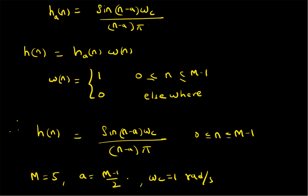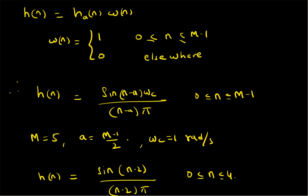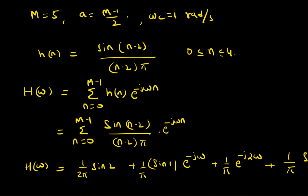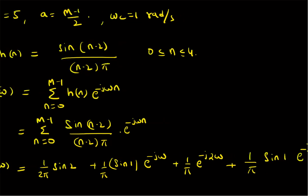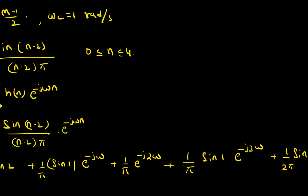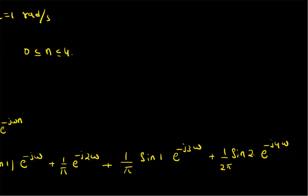In this example, the parameters are: M = 5 (filter length), a = (m−1)/2 = 2, and ω_c = 1 radian per second. So h(n) = sin(n−2) / ((n−2)π) for n = 0 to 4. Applying the DTFT gives the explicit frequency response: H(ω) = (1/2π)·sin(2) + (1/π)·sin(1)·e^{−jω} + (1/π)·e^{−j2ω} + (1/π)·sin(1)·e^{−j3ω} + (1/2π)·sin(2)·e^{−j4ω}. That is the explicit frequency response of the FIR filter.